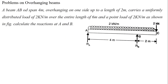Next problem: A beam AB of span 4 meters, overhanging on one side up to a length of 2 meters, carries a uniformly distributed load of 2 kilo Newton per meter over the entire length of 6 meters. A point load of 2 kilo Newton is also acting at the end. The UDL acts along the full 4 plus 2 equals 6 meter span.